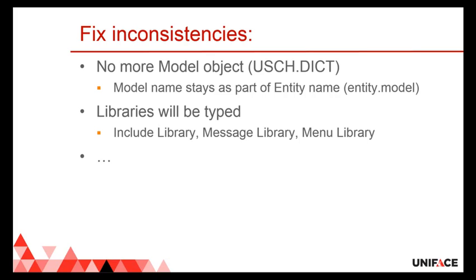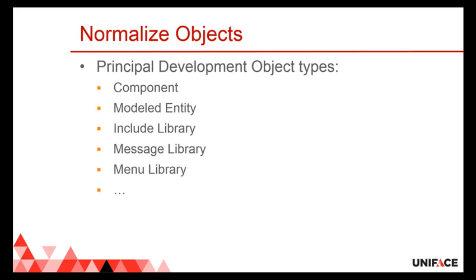We took out the model as an object and introduced the model entity as a principal development object. So in version 10 it is the model entity that you open in an editor, export, and or save to a file. It is the model entity that will be maintained in your source control system. Also the version 9 library object did not fit the profile, and therefore we split up the library into different types. This allows you to have an include library as a logical work unit next to a message library or a menu library. Examples of principal development object types are component, modeled entity, include library, message library, menu library, startup shell, etc.